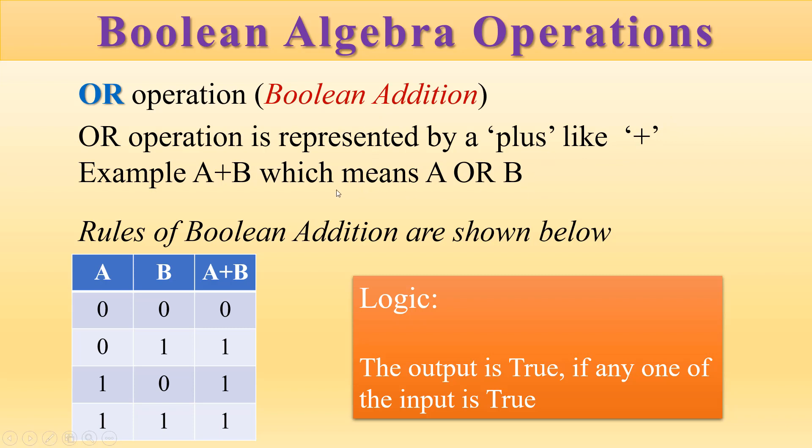The meaning is different compared to the meaning in the decimal number system. For example, if I write A plus B, it means A OR B. The rules for OR operation are as given here.